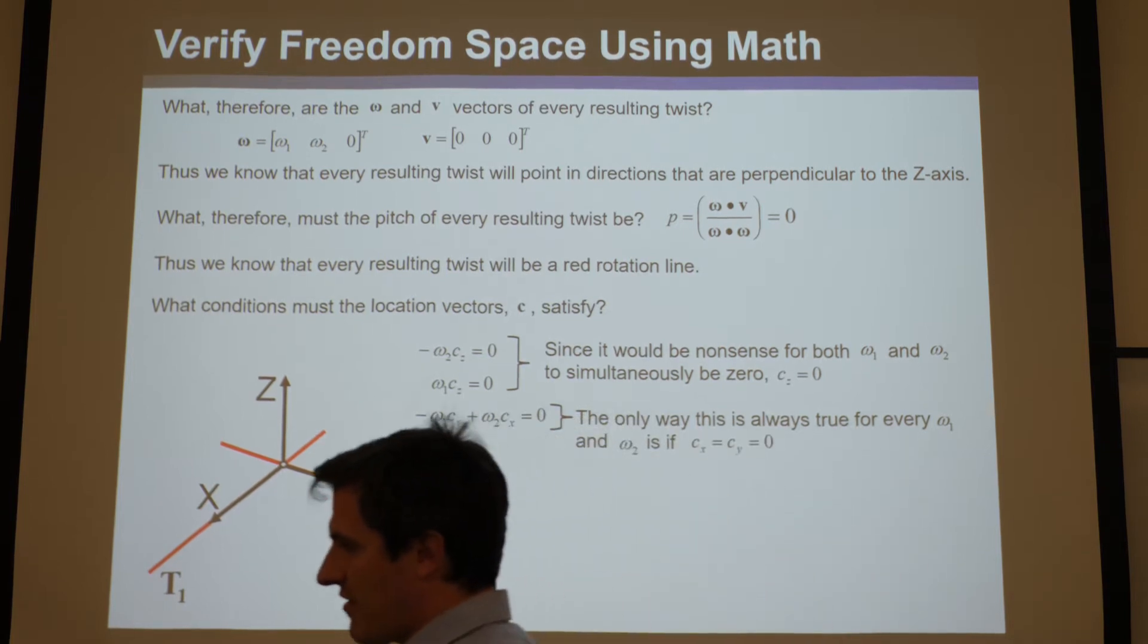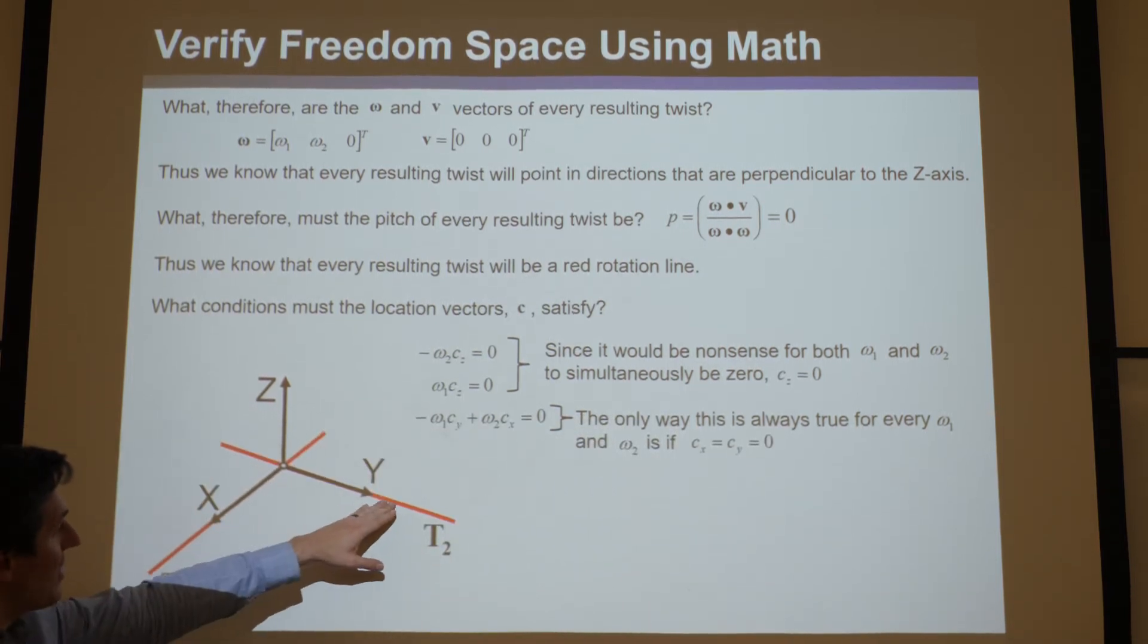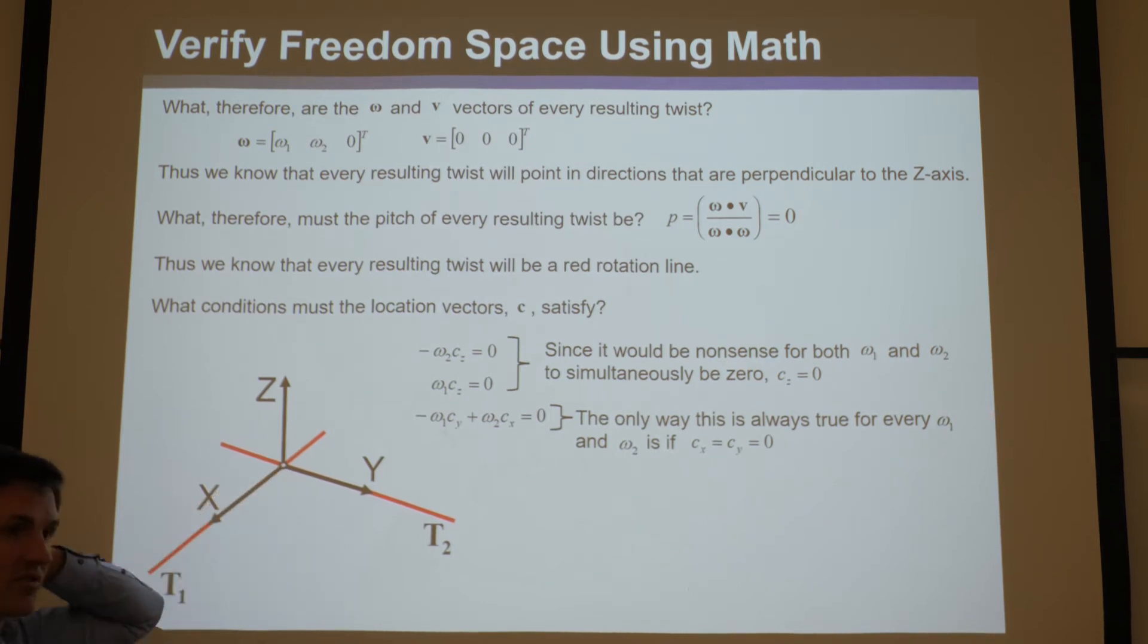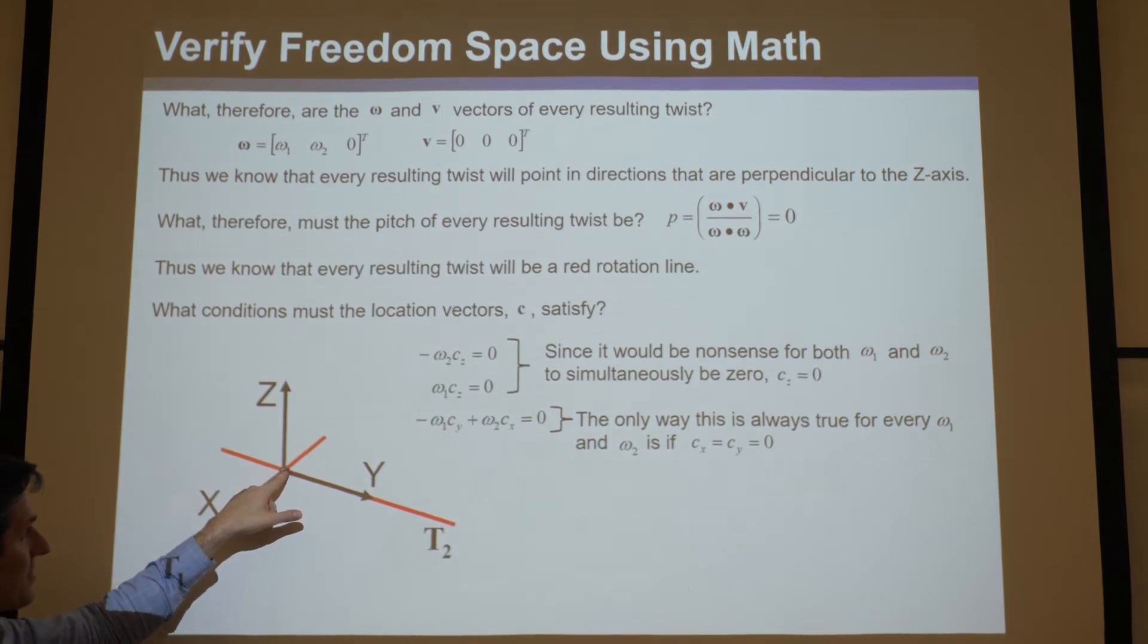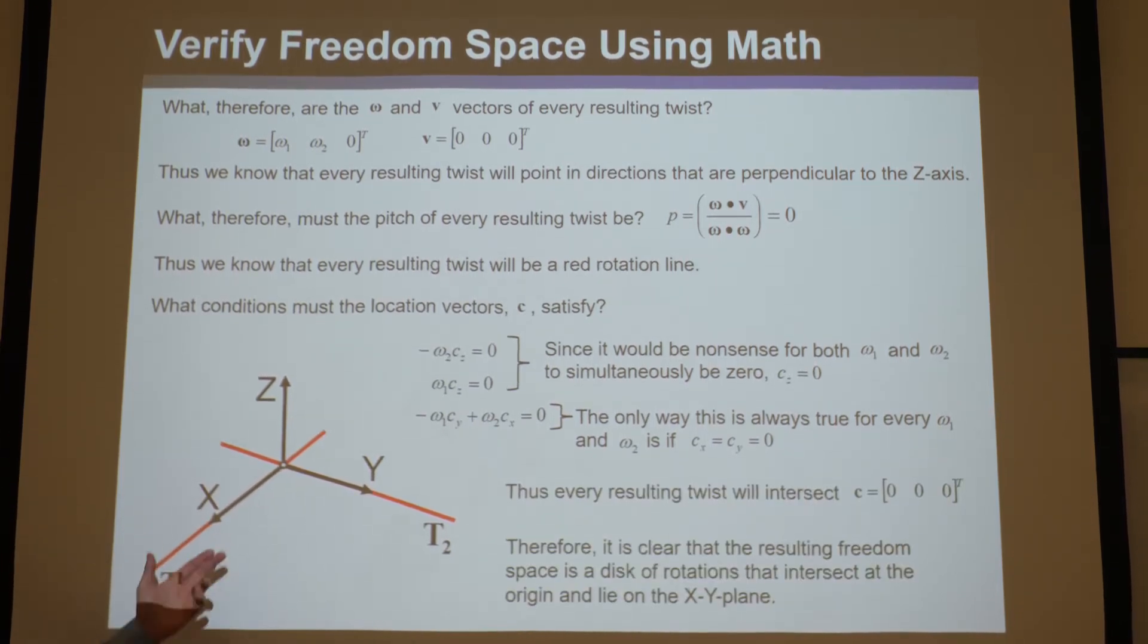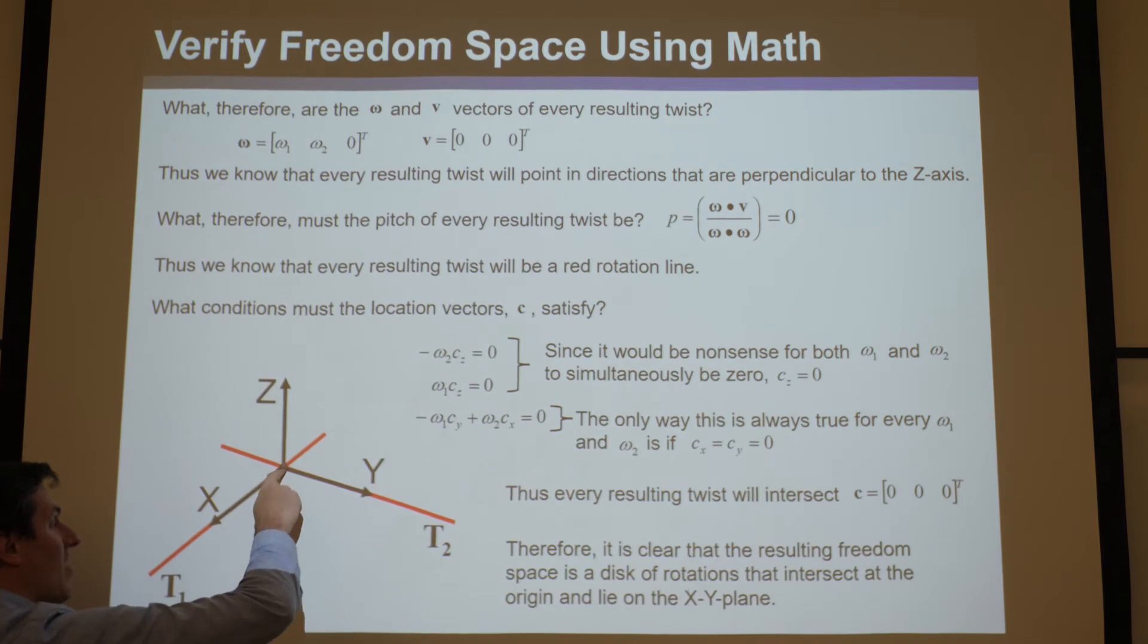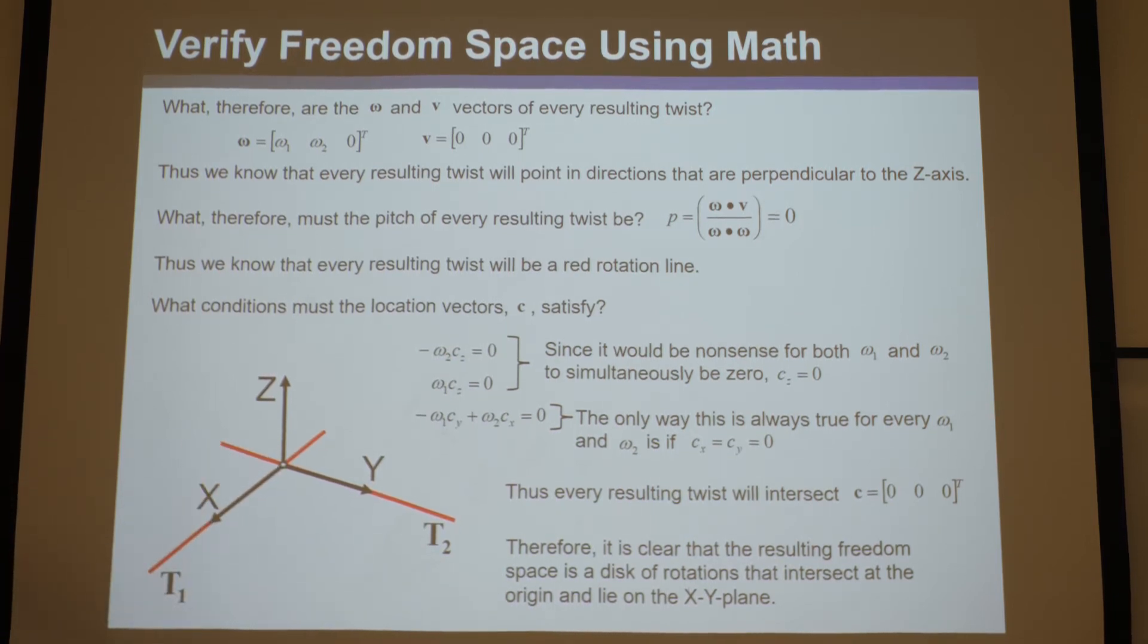So now let's put together everything we know. We know the linear combination of these two things will produce lines of action that are perpendicular to Z. We know they'll all be red because they have a pitch of 0. And we know that a location vector that works for all of them is right here at the center. Well, what shape is that? That is a disk—a disk of red lines. They're all red. They're all perpendicular to Z. And they all have a location vector right at the center there. So the disk is centered about there. Do you see how by linearly combining the twists mathematically and then deconstructing and using this logic, you can deduce the shape that it would be? That can mathematically prove to you that it will make a disk of red rotations.